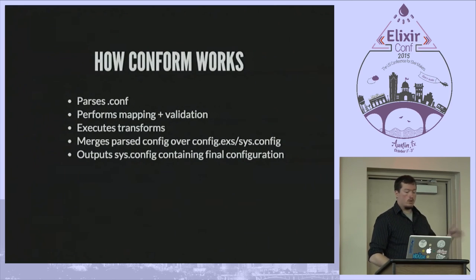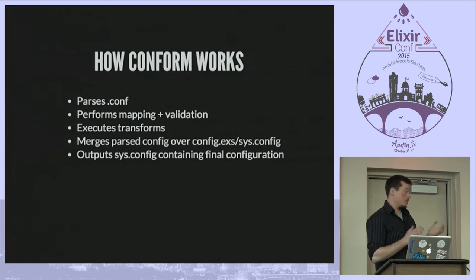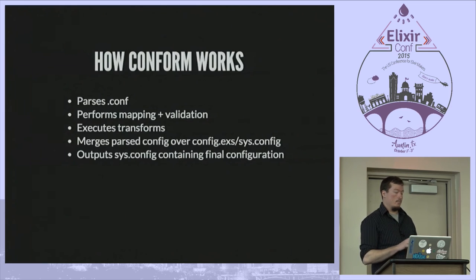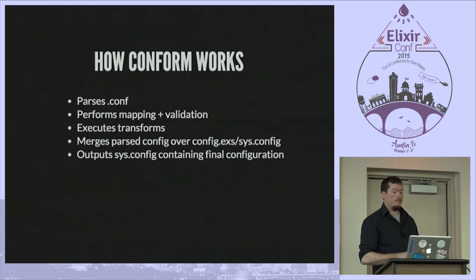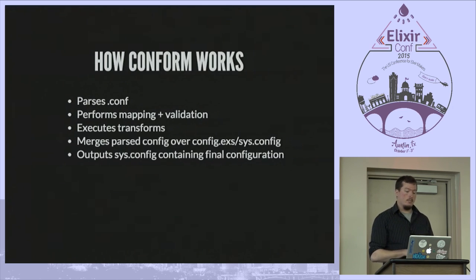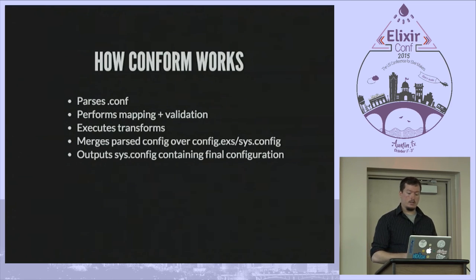A quick overview of how Conform works: there's a .conf file — the user-facing conf. It parses that, then maps the settings from their source to their target and runs validation against those mappings. It then executes all the transforms that are present and merges that parsed, mapped, and transformed config over the top of config.exs. All that is output to sys.config.